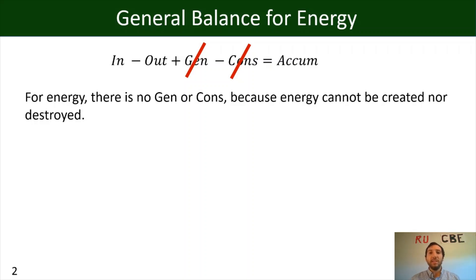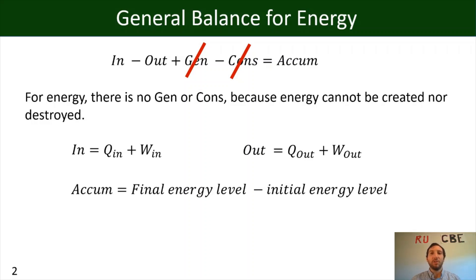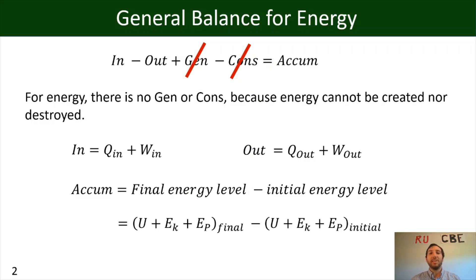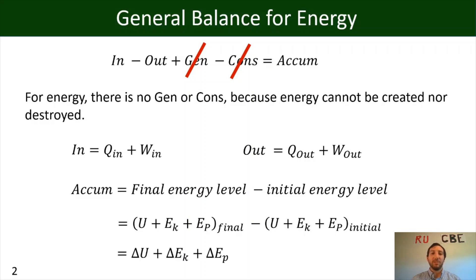For us, our 'in' term would be the heat coming into our system plus the work coming into our system. Our 'out' term is the heat exiting and the work exiting our system. Our accumulation term is the final energy level minus the initial energy level — that takes into account the final internal energy, kinetic, and potential energy states minus the initial internal, kinetic, and potential energy states. So we write that as ΔU plus ΔEK plus ΔEP.